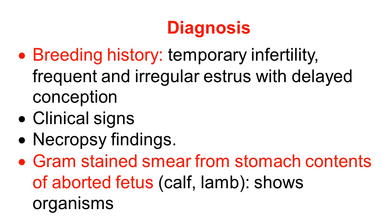We are going to discuss the important part of diagnosis of bovine genital campylobacteriosis. Breeding history is very important — history of temporary infertility, repeat breeding, frequent and irregular estrus with delayed conception. These histories are important for the diagnosis. Clinical findings include early embryo death, early abortion, and mid-term abortion is also observed.